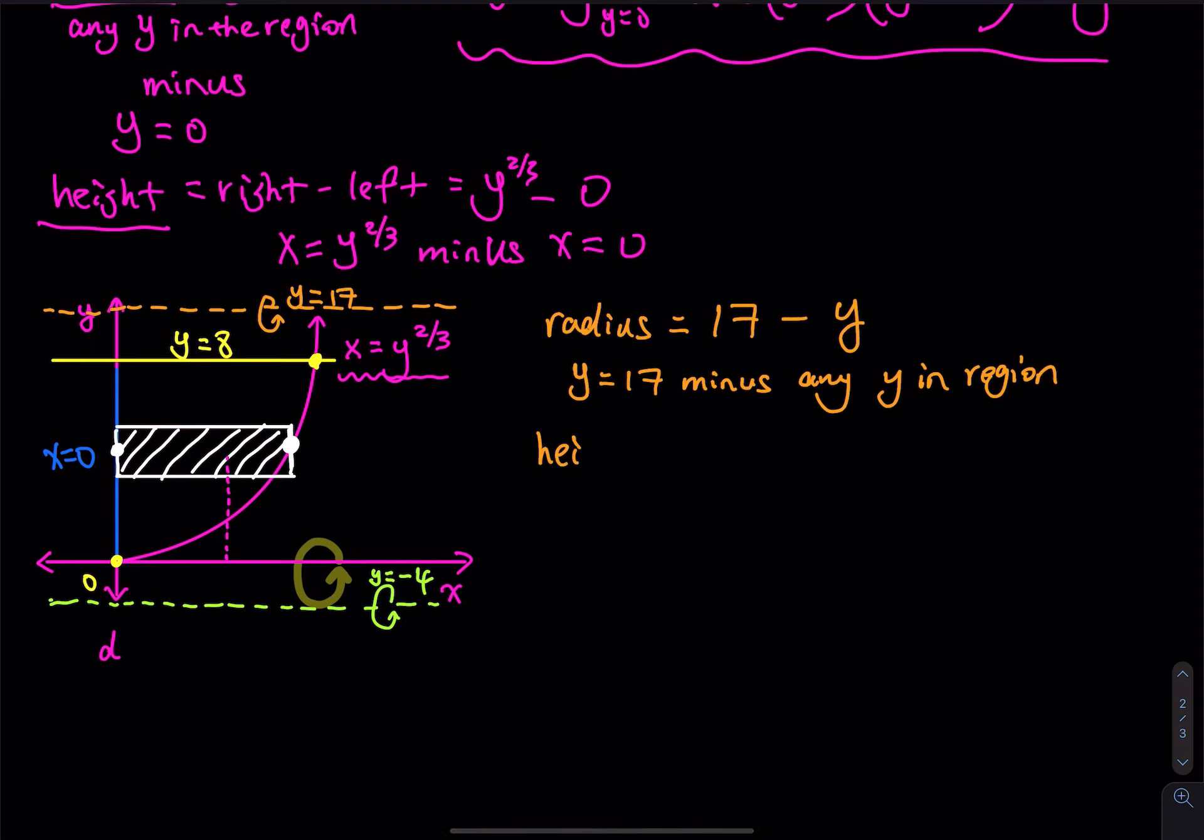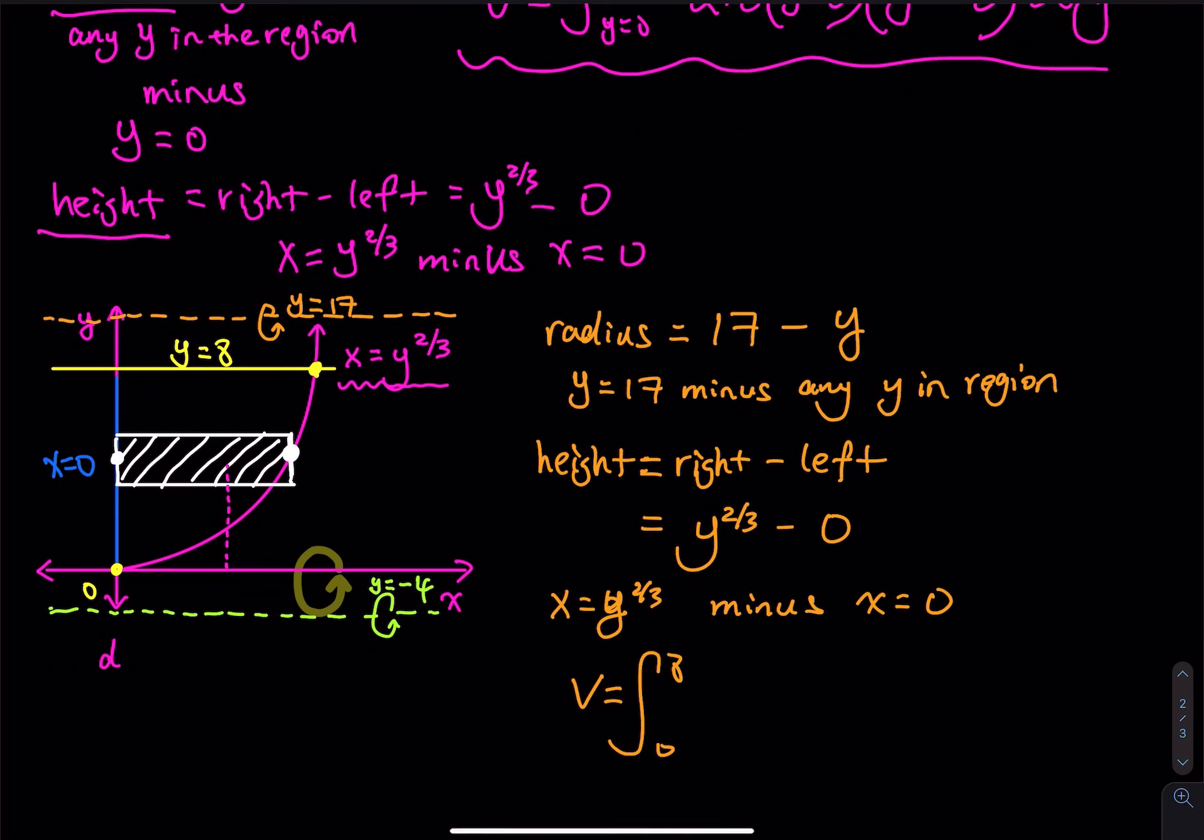So any y between 0 and 8 is a smaller y. 17 is way bigger than that. So you use 17 subtract that to make the radius positive. And then the height is always right minus left. So the right curve minus the left curve. So that equals y to the 2/3 minus 0. This is x equals y raised to 2/3 minus x equals 0, the blue line. So everything is ready. Now I can set up my volume. So the volume equals, y goes from 0 to 8, and then we have 2π radius (17 - y), and then times the height (y^(2/3) - 0). And this is dy.